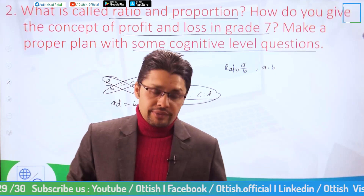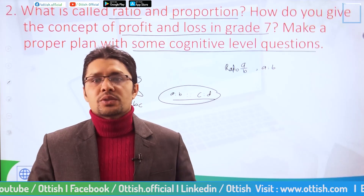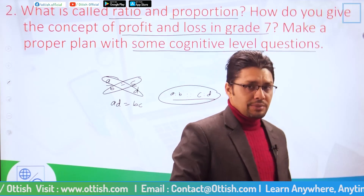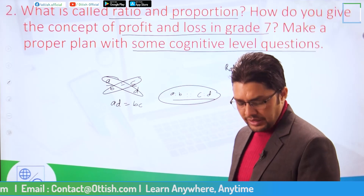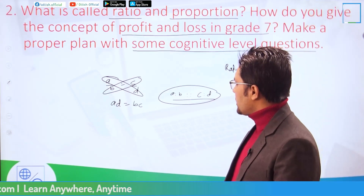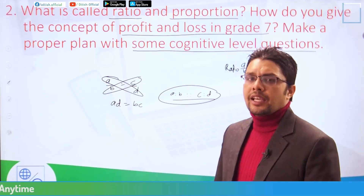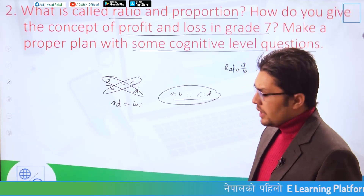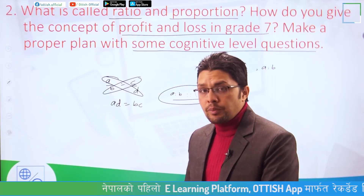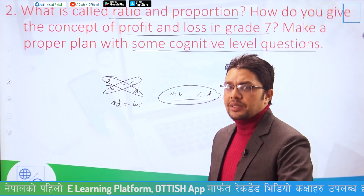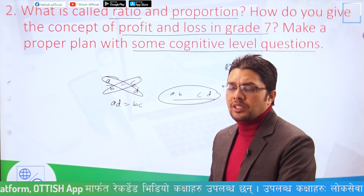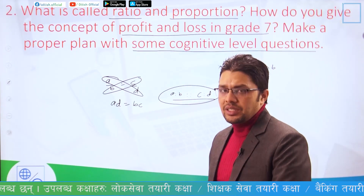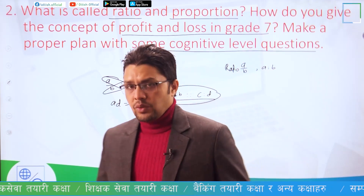Proportion compares quantities with the same units. A/b with the same units gives the ratio of A to B. In proportion, the means products and extremes products are equal.